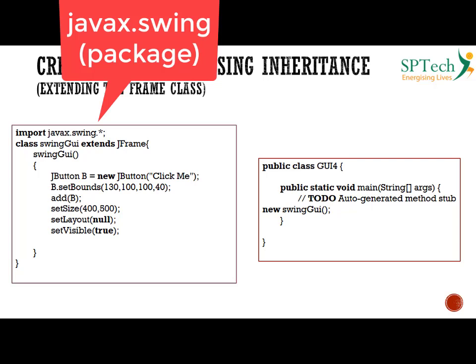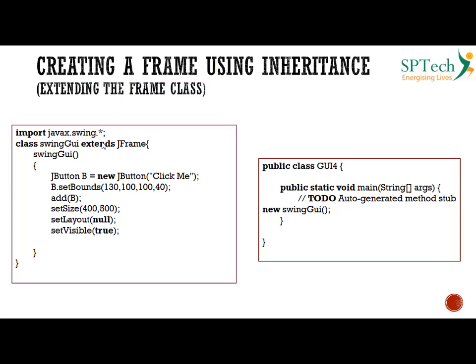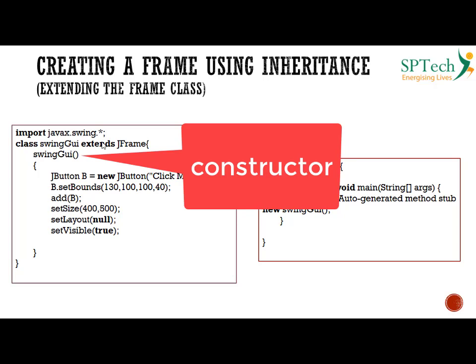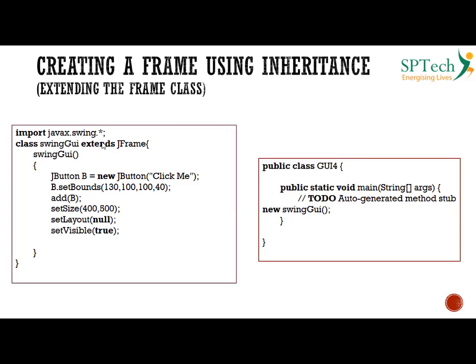The first program I am showing here is how to create a frame using extension or inheritance. The first thing you are going to do is import javax.swing.*, which is a package — similar to how in AWT we imported java.awt.*. Then I am creating a class called SwingGUI which extends JFrame. Remember that here the frame class is called the JFrame class. I am creating a constructor called SwingGUI. The constructor is called as soon as an object is created and has the same name as the class. The SwingGUI constructor will have a button B — a button object of the JButton class — with the text 'Click Me'. Then we are setting the properties of the button with respect to its X, Y coordinate position and the height and width of the button using the setBounds method.